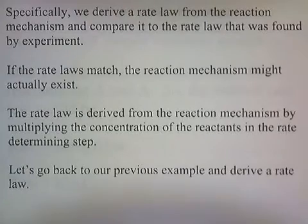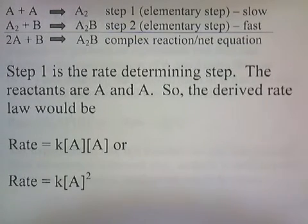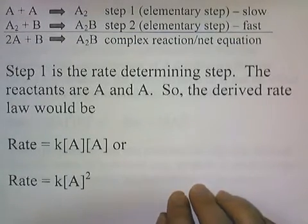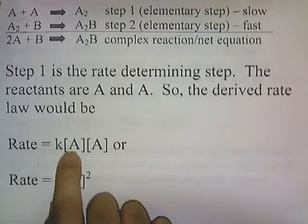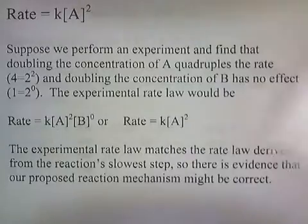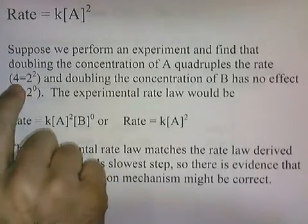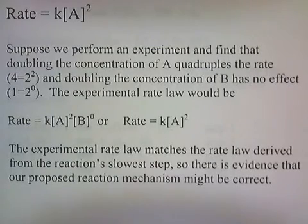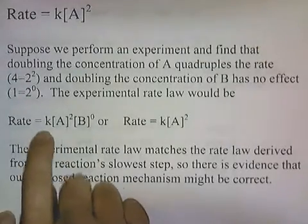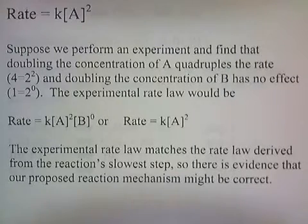Let's go back to our previous example and derive a rate law. Step one is the rate determining step. The reactants are A and A, so the derived rate law would be rate equals K times [A] times [A], or K[A]². Now suppose we perform an experiment and find that doubling the concentration of A quadruples the rate — quadrupling is times 4, which is 2 squared. And doubling the concentration of B has no effect — multiplying by 1, which is 2 to the 0. So the experimental rate law is K[A]²[B]⁰, or rate equals K[A]². The experimental rate law matches the derived rate law, so there's evidence that our proposed mechanism might be correct.